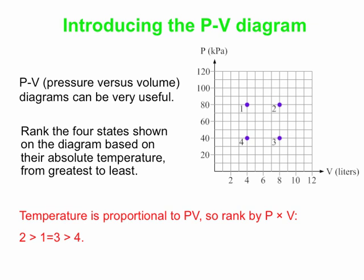One and three are actually the same as each other. 80 kilopascals times 4 liters for state one equals 40 kilopascals times 8 liters for three. Then we have state four, which has the smallest combination of pressure times volume. The temperature in states one and three is twice that of state four because P times V for either state one or three is two times P times V for state four. We also have a factor of two in temperature going from state one or three to state two.